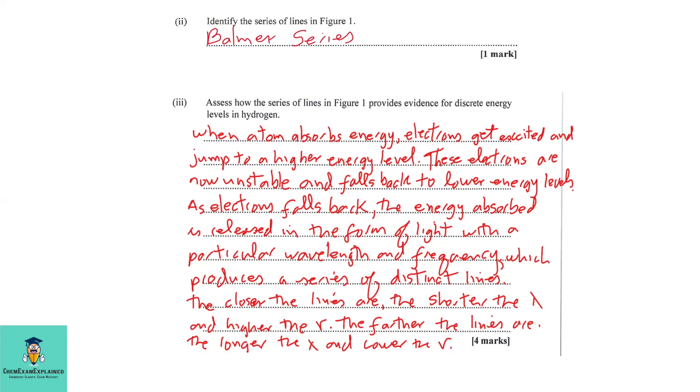Part A3: Assess how the series of lines in Figure 1 provides evidence for discrete energy levels in hydrogen. When atoms absorb energy, electrons get excited and jump to a higher energy level.